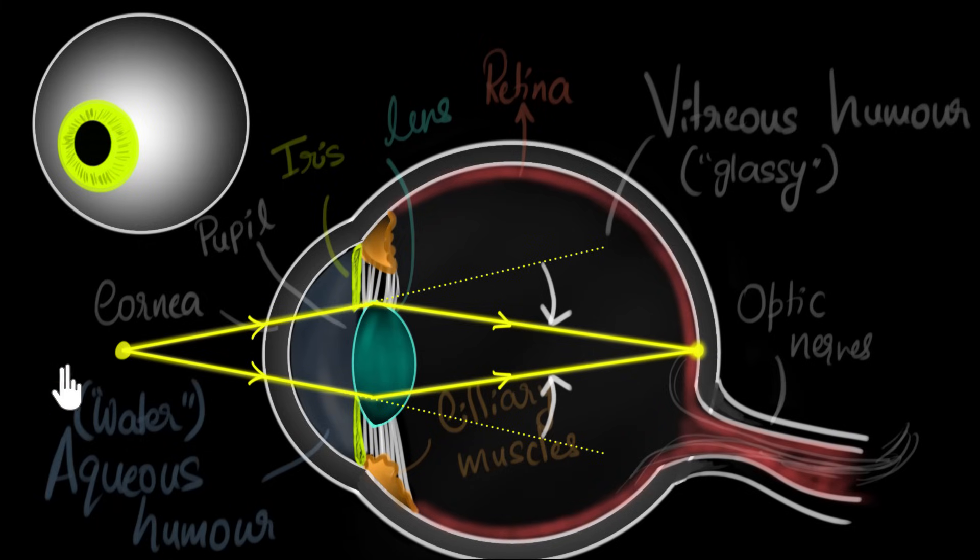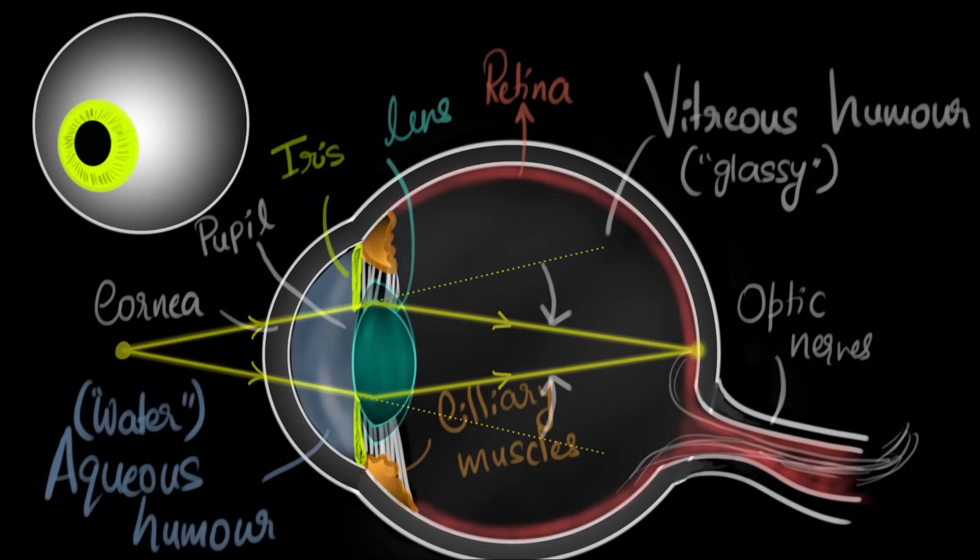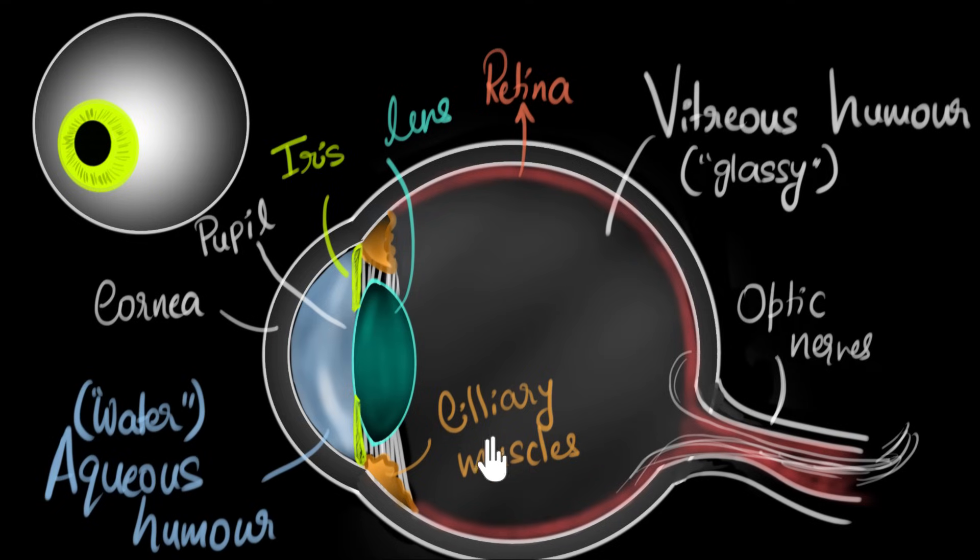And that's how depending upon the distance of the object from our eyes, the curvature of the lens will keep changing. And that is done by these ciliary muscles. And this phenomenon where ciliary muscles change the power of the eyes by changing the shape of the lens is called accommodation. So that's their job. Their job is to perform accommodation.